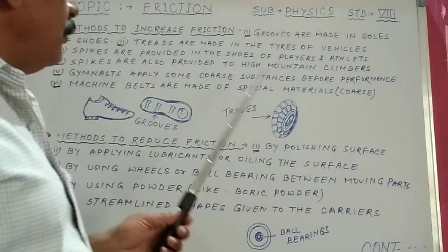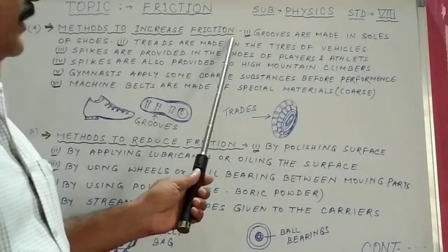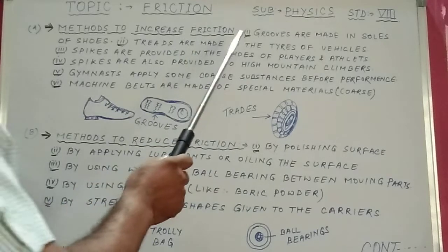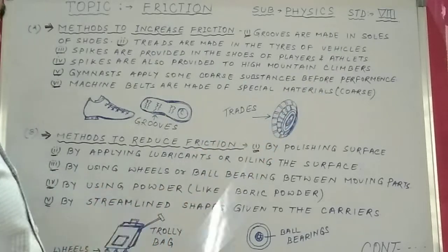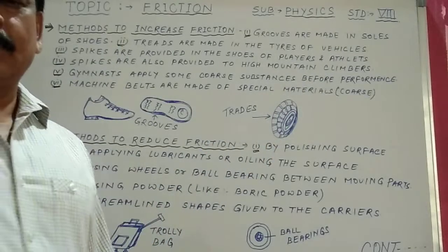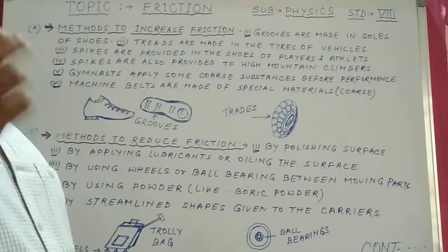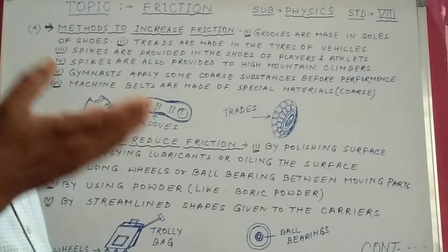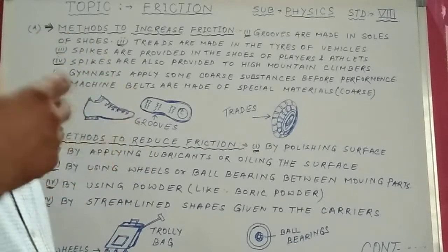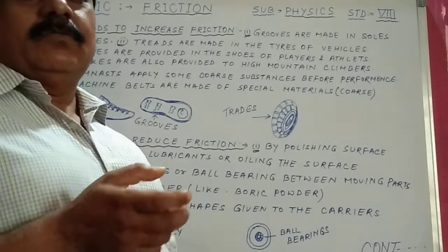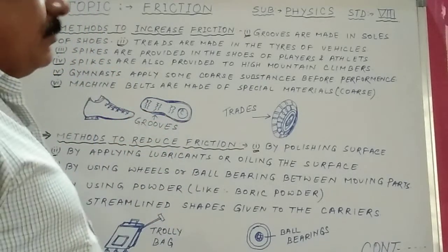Methods to increase friction. Point one: grooves are made in the soles of shoes. Our shoes and slippers have soles, and grooves are made in their soles to increase friction so that we don't slip and fall down — to protect ourselves from slipping.